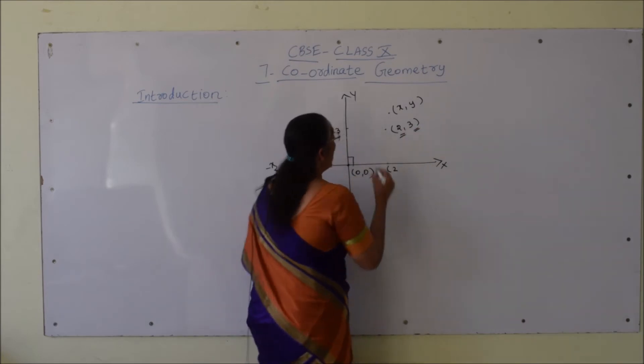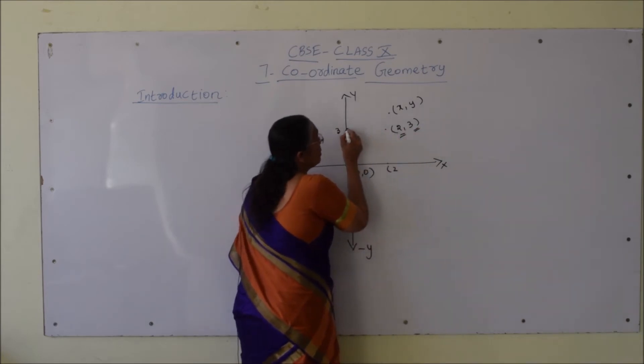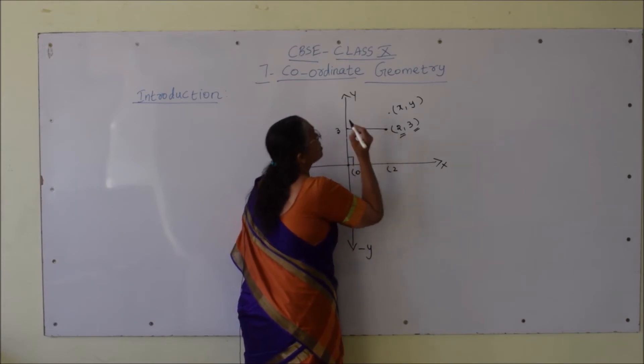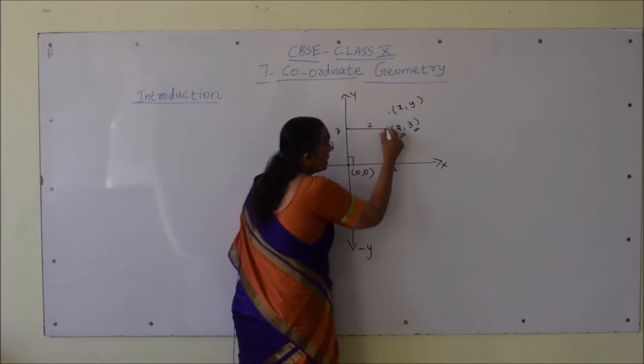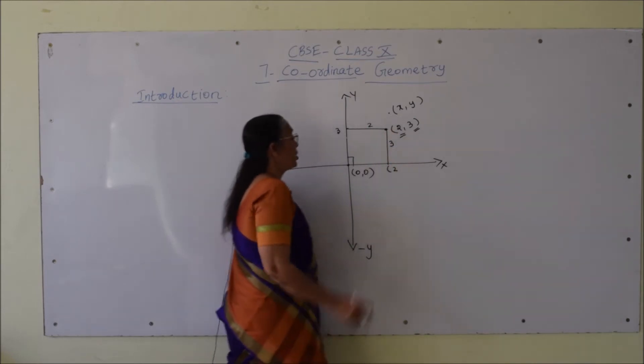2 is the distance of the point from the y-axis and 3 is the distance from the x-axis.